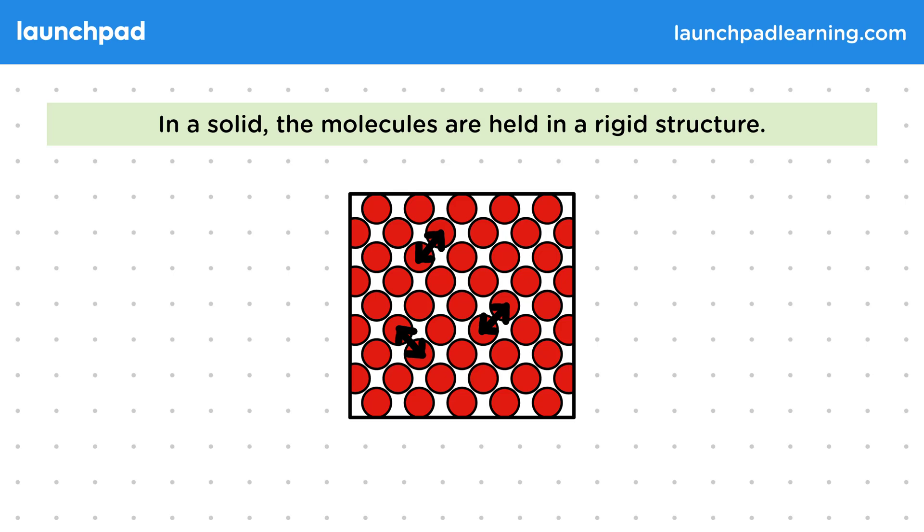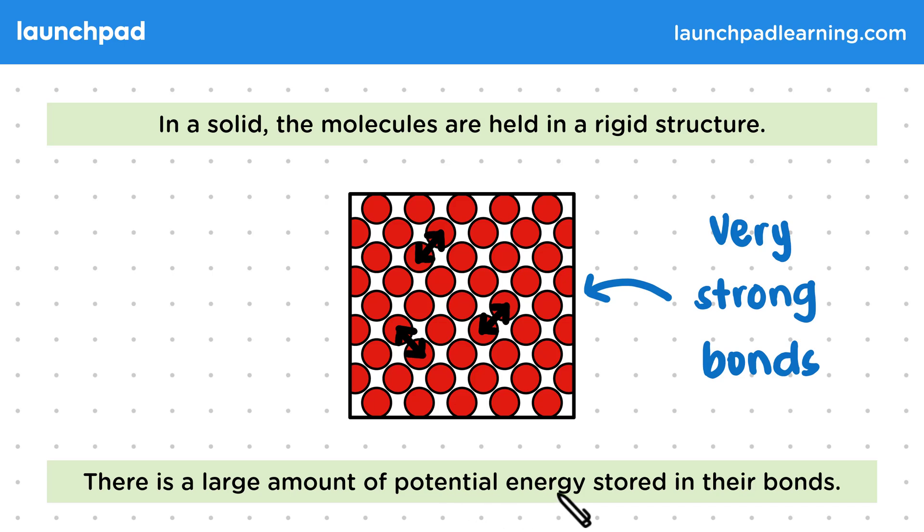The solid has this structure because the molecules are being held together by very strong bonds. This means there is a large amount of potential energy stored in their bonds. So the stronger the bonds, the more energy must be stored in them. So substances in the solid state will have the most potential energy.